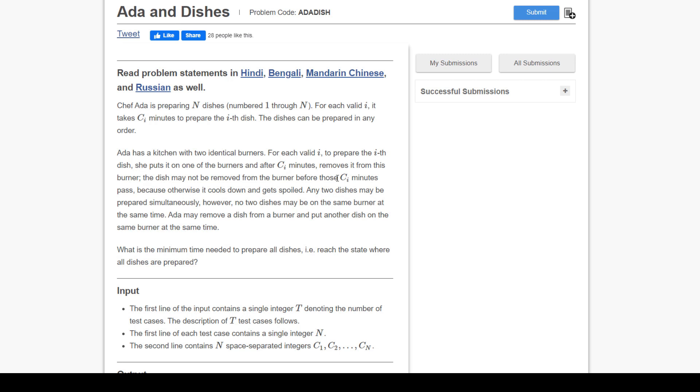The input: the first line contains a single integer T denoting the number of test cases. The first line of each test case contains the integer n, the number of dishes. The second line contains n space-separated integers C1, C2, up to Cn. For each test case, output a single line containing one integer: the minimum number of minutes required to prepare all the dishes.